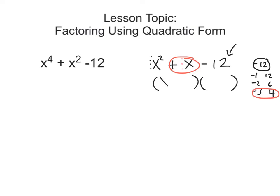So we end up putting x times x here, because x times x is x squared. And then we put a minus 3 and a plus 4 in the parentheses, because of this minus 3 and this plus 4. Again, not magic number, just factoring the first way we learned. So we have x minus 3 times x plus 4.